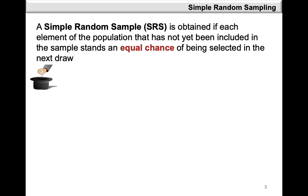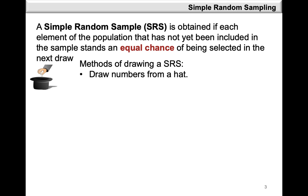The first method is the simple random sampling method, where every element from the population has an equal chance of being selected. There are various methods on how to obtain a simple random sample. The first method consists of drawing numbers from a hat. In order for you to use this method, you need to know all the elements from the population and assign each element a number. Place the numbers in a hat and select one number after the other randomly until you have all the elements for your sample.